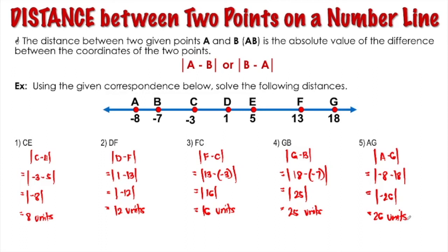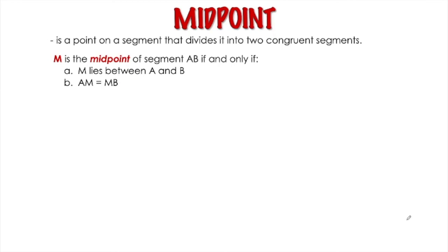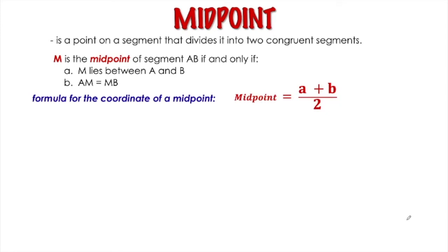Now let's move on to the midpoint. A midpoint is a point on a segment that divides it into two congruent segments. M is the midpoint of segment AB if and only if: first, M lies between A and B, and second, AM is equal to MB. We are going to use this formula to solve for the coordinate of a midpoint, wherein A and B are the coordinates of the points on a number line.